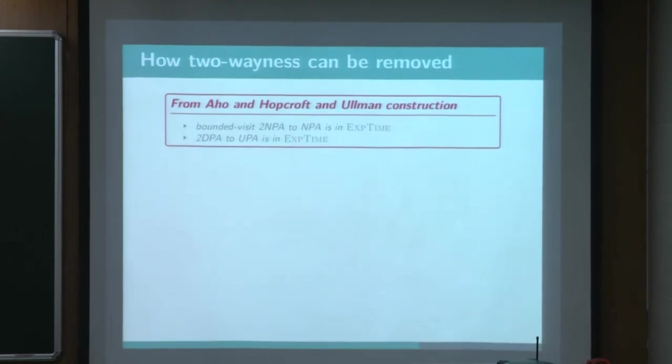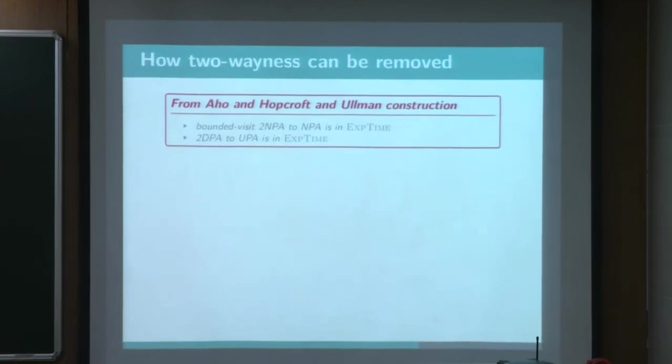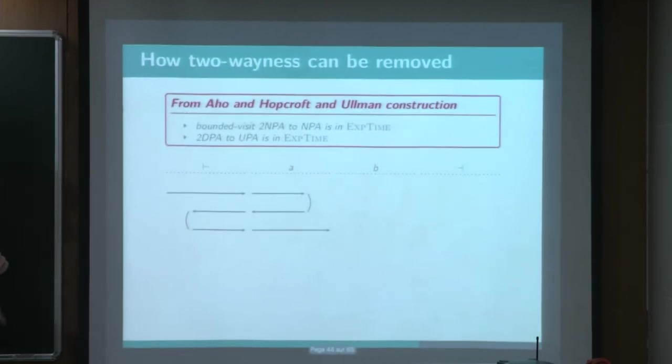This is a very famous construction from Howard Kraft-Wuhlmann, and I want just to give you the intuition. So here is some input words, and this is a two-way run. Well, this is really the transition, and those two states are equal. And basically, this construction consists to guess this block of transition for each symbol,